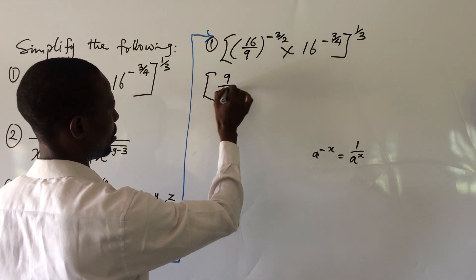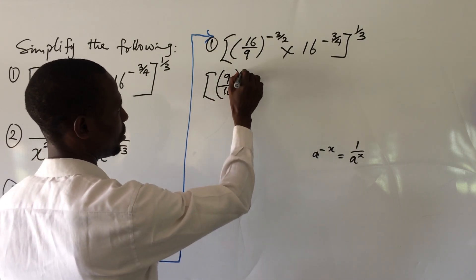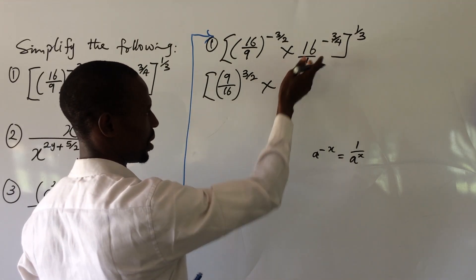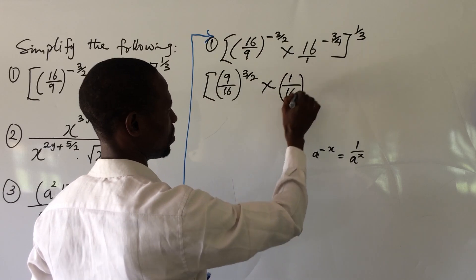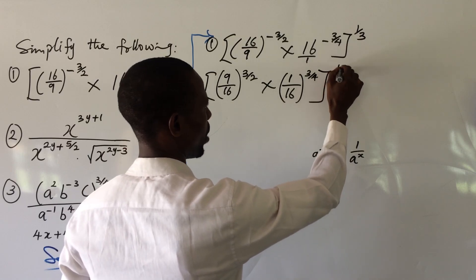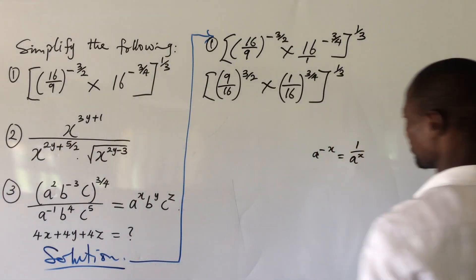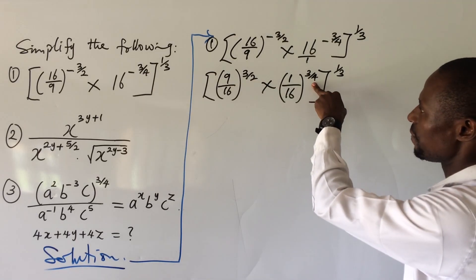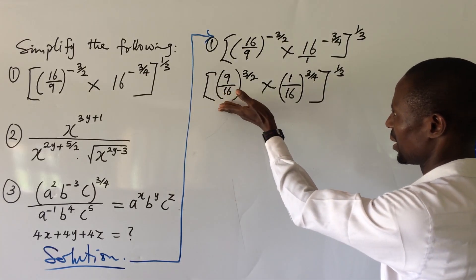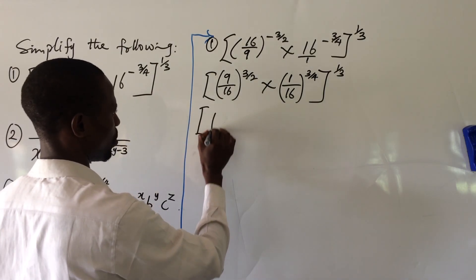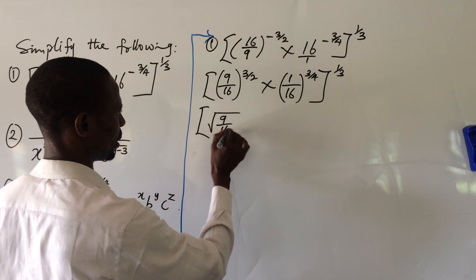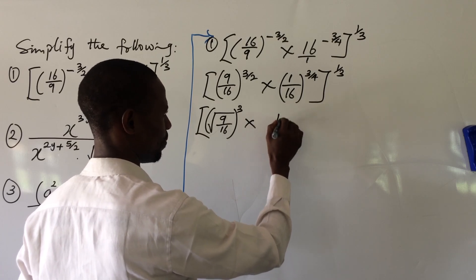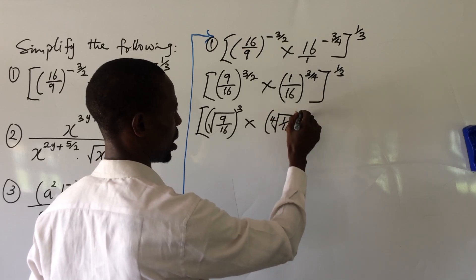So we can write this as: square bracket, 9 all over 16, close bracket, all to the power of 3 over 2 — the minus has left — times 1 all over 16, close bracket, all to the power of 3 over 4, into 1 all over 3. The power 3 over 2 is a square root and 3 over 4 is a fourth root. So we rewrite this as: the square root of 9 over 16, all to the power of 3, times the fourth root of 1 over 16, all to the power of 3, all to the power of 1 over 3.